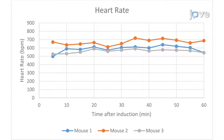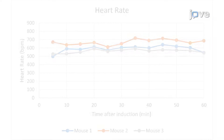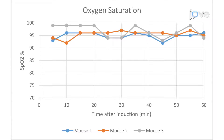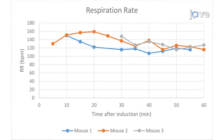The heart rate of the three mice, measured in beats per minute using pulse oximetry at 5 to 60 minutes after induction, is shown here. The animals' heart rates remained relatively stable and consistent through the maintenance period. This figure shows oxygen saturation levels of the three mice over the same time period. Finally, the respiration rate of the mice in breaths per minute between 5 and 60 minutes after induction with the digital low-flow anesthesia system is shown here.